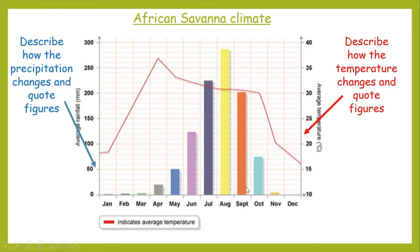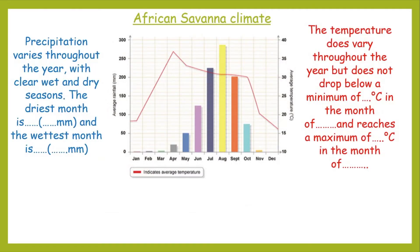We've always got to stay really highly skilled with our practice on analysing graphs — you will always get a graph question in the exam, probably more than one. Describe means say what you see, and whenever you're describing a graph you've got to quote figures. To describe the precipitation, talk about how the trend changes — does it increase or decrease? When is it at its highest? When is it at its lowest? Then do the same for the temperature. I think there's a copy of this graph on the handout that accompanies this lesson.